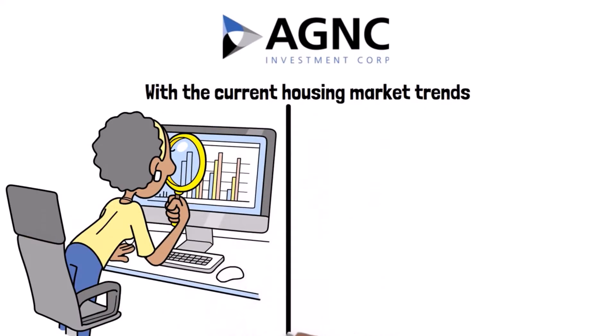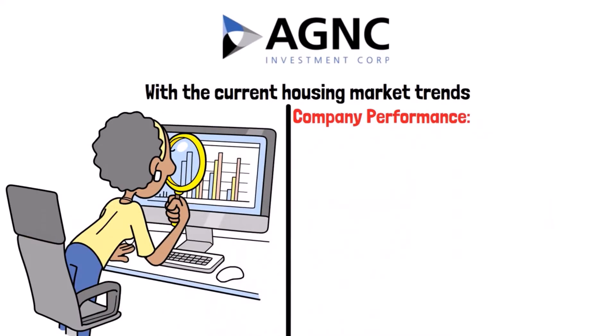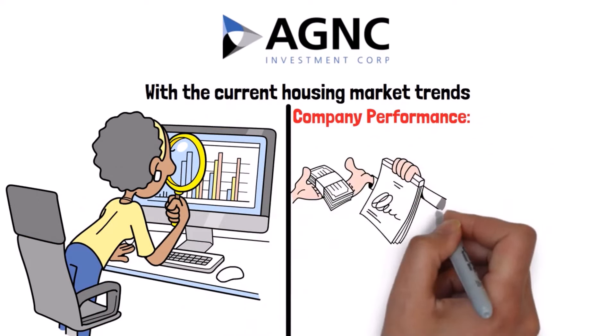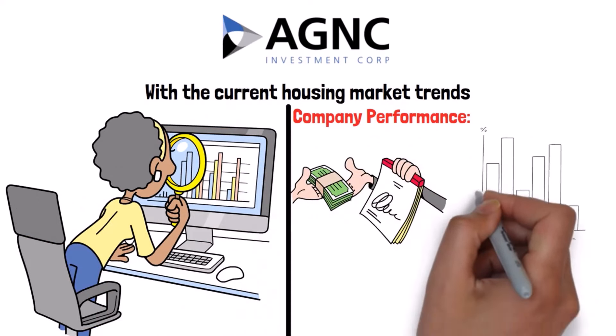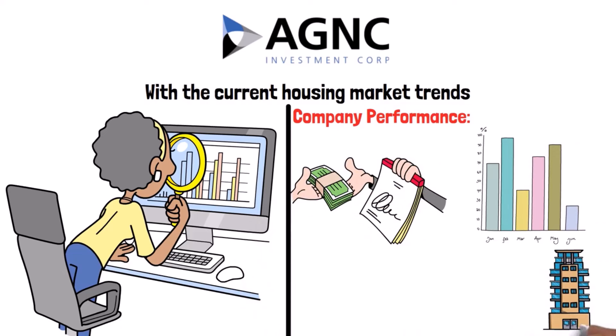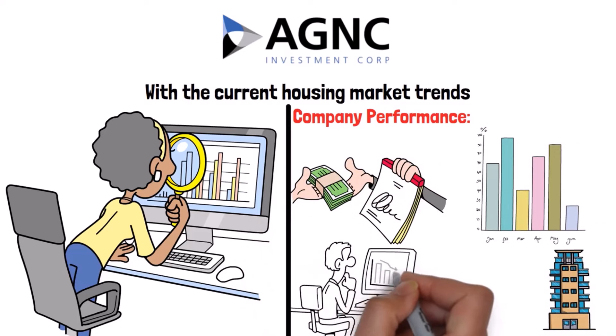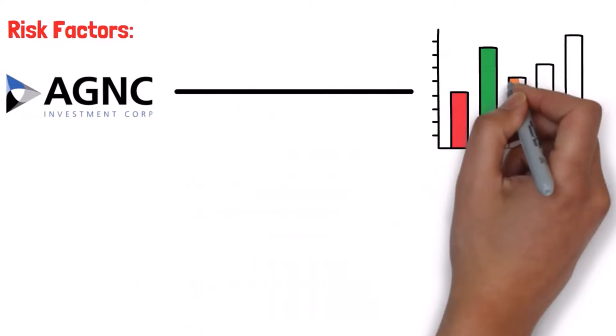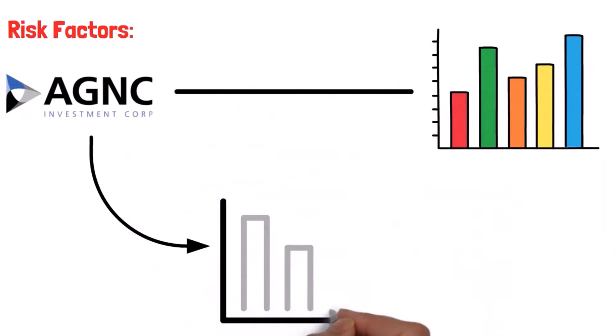Company performance: AGNC has maintained a consistent dividend payout despite market volatility. Recently, the company has shown resilience in navigating the fluctuating interest rate environment, making strategic adjustments to its portfolio. Risk factors: While AGNC offers high dividends, it's sensitive to interest rate fluctuations. A rising interest rate environment can impact its profitability.